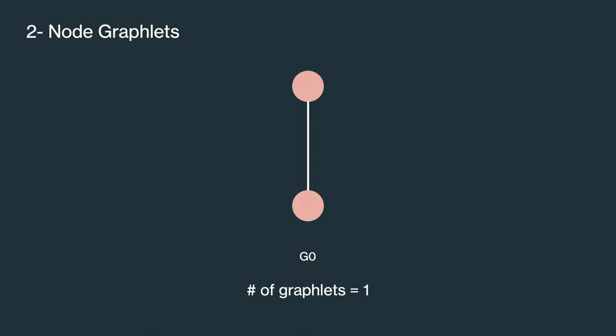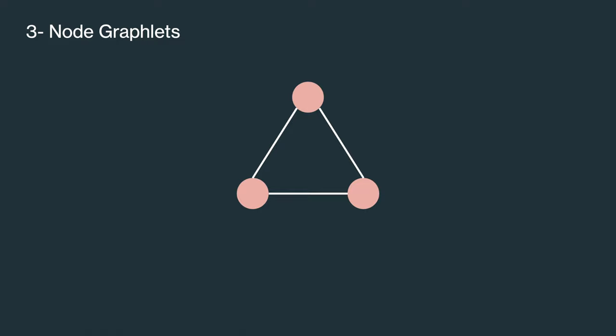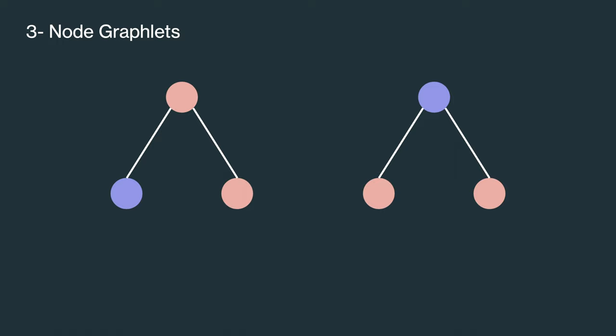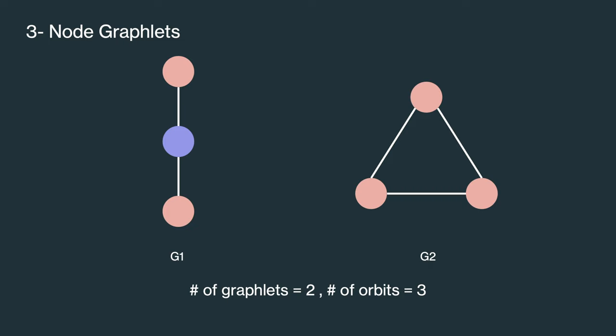For a three-node case, this is an option for a graphlet and this is two. But there is a difference. For this one, all the node positions are equivalent. While for this one, there is a difference between the middle position and the end positions. And this difference becomes significant when we consider at what node is the graphlet rooted to the actual graph. Because of this, we call this structure has two orbits. Thus, in spite of having two graphlet structures for three nodes, it has three orbits.